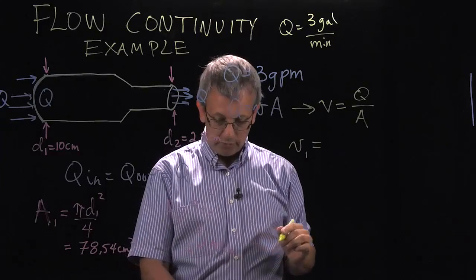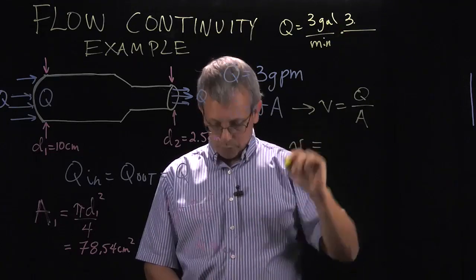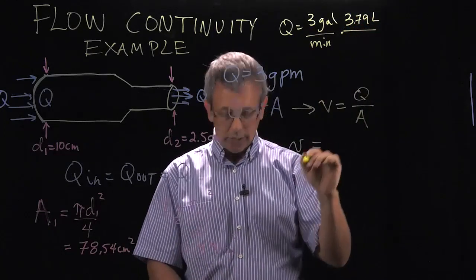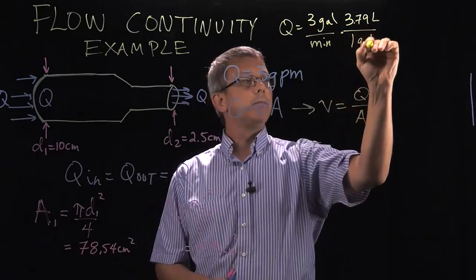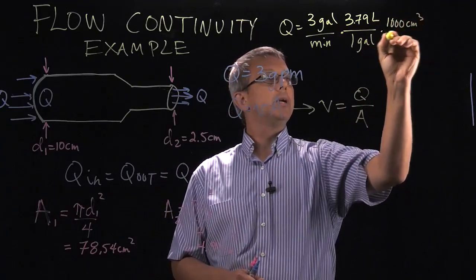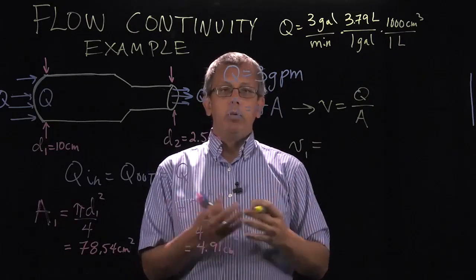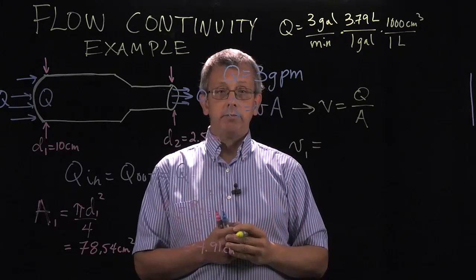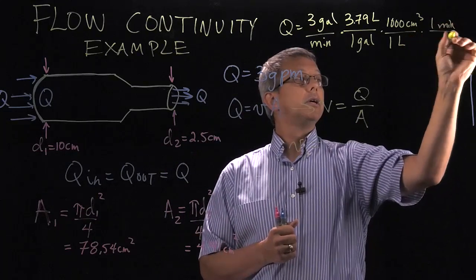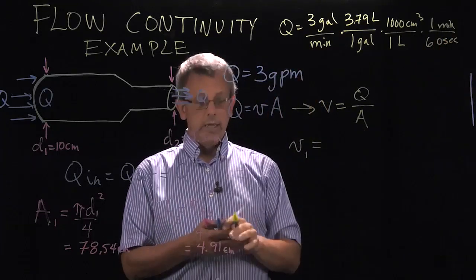and I want to make a conversion, I know there are 3.79 liters in one gallon, and there are 1,000 cubic centimeters in one liter, and generally we want to do flow rates in meters per second. So we're going to convert the minutes by representing one minute equals 60 seconds.